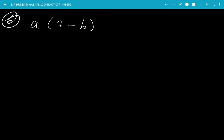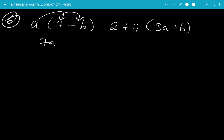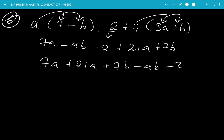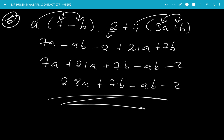Example 6 — Simplify: a(7 − b) − 2 + 7(3a + b). The a multiplies the first bracket: a times 7 is 7a, a times negative b is minus ab. The minus 2 just drops down. The 7 expands the last bracket: 7 times 3a is 21a, 7 times b is plus 7b. Collecting like terms: 7a plus 21a is 28a; plus 7b; minus ab; minus 2. Final answer: 28a + 7b − ab − 2.